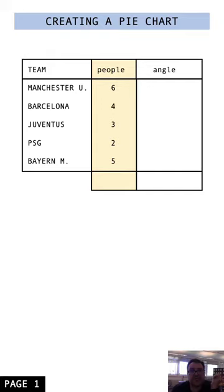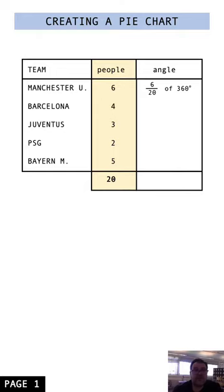A quick lesson on how to create a pie chart. We've got favourite football teams of class NYP1: Manchester United, Barcelona, Juventus, PSG, and Bayern Munich, with 6, 4, 3, 2, and 5 people respectively. That adds up to 20 people.